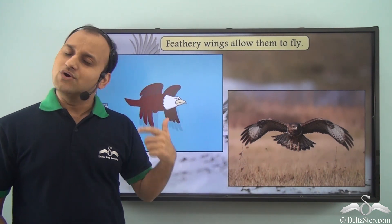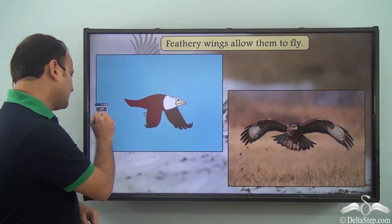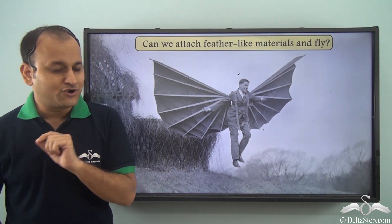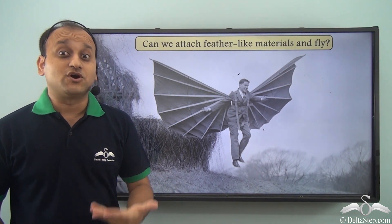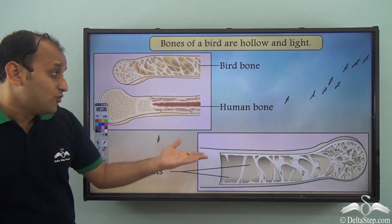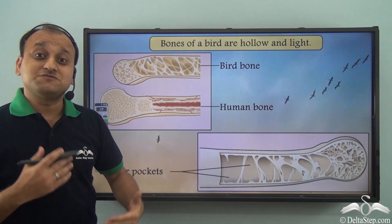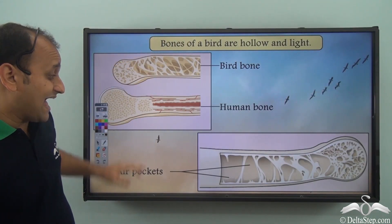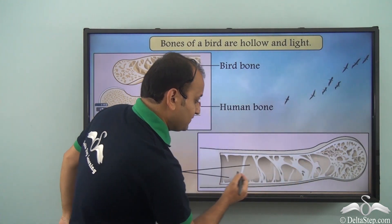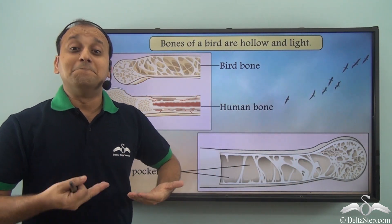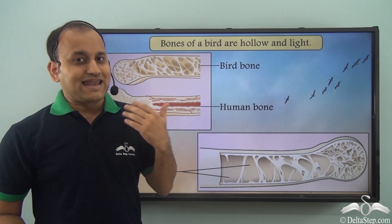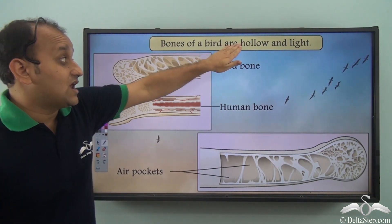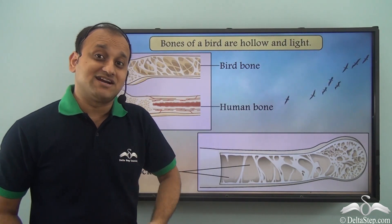Feathered wings is a major reason for birds to fly, but is that the only reason? Can we attach feather-like material and fly? As you can see, this man trying to do so — not really. There are a number of reasons why birds can fly. One more reason is that birds have a special type of bones. Their bones have air pockets, which allow their weight to be much lighter compared to ours, and as a result they are easily able to carry their weight up in the air.